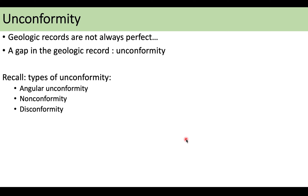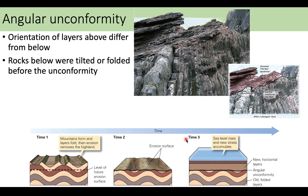Let's quickly go over the different types of unconformity. Geologic records are not always perfect — when we find a gap in the geologic record, that is an unconformity. We have angular unconformity, nonconformity, and disconformity. An angular unconformity is where the layers beneath have been tilted before the layers on top are deposited — there's tilting, some erosion, and then more layers are placed on top, so something is missing between those folded layers and the flat layers.